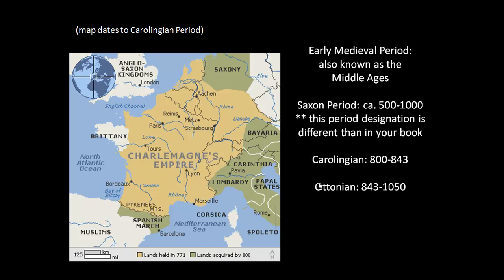He was crowned in St. Peter's Basilica, which was built by Constantine I, Roman Emperor, to embrace Christianity. So we have an emperor crowned on the most significant Christian religious holiday by a pope, in the most significant structure in all of Christendom, built by Constantine I. Do we think we're going to see a separation of church and state during the Carolingian period? No — there is no separation there.